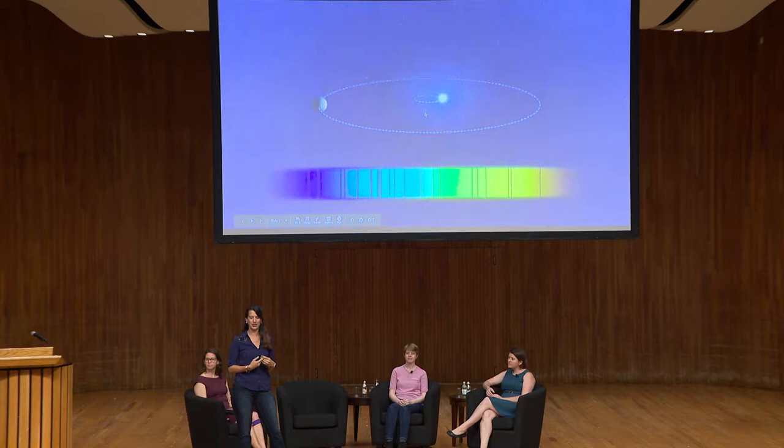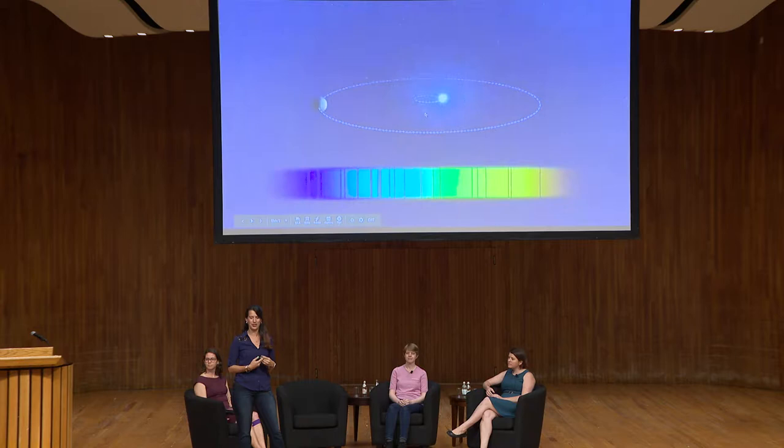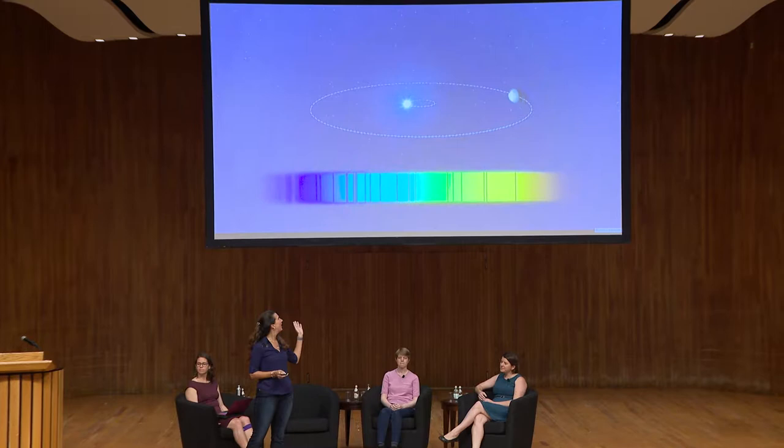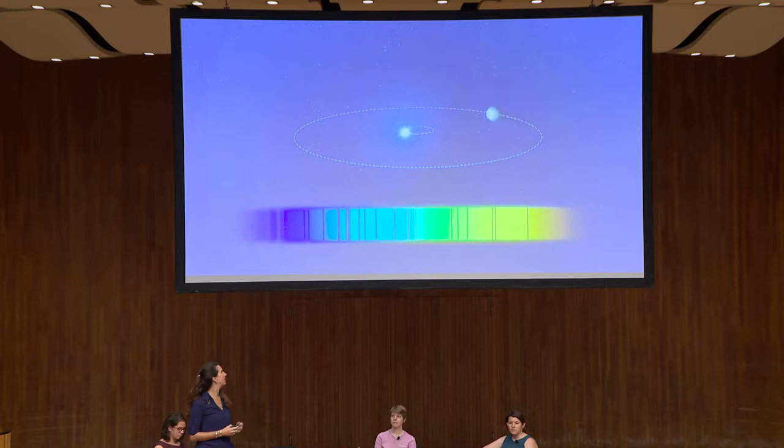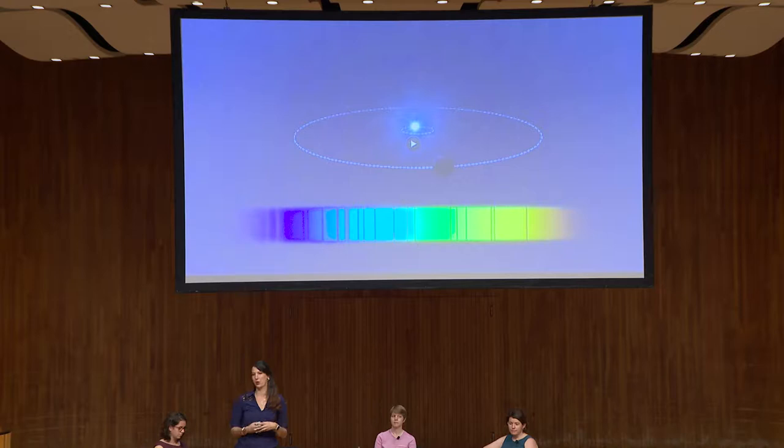That first video was supposed to show the way radial velocity observations work — the science really — which is that if you have a planet orbiting around the star, then the planet induces a gravitational pull on the center of the star, which causes the star to do a little hula hoop motion. That hula hoop motion shows up in spectra as a shift in the star's absorption lines — little black lines that serve as a chemical fingerprint for the star.